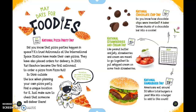National Chocolate Chip Day is May 15th. Do you know how chocolate chips were invented? A baker threw chunks of a chocolate bar into a cookie. National Strawberries and Cream Day is May 21st — like peanut butter and jelly, strawberries and cream are meant to go together, so put whipped cream on some fresh strawberries. And National Hamburger Day is celebrated on May 28th. Americans eat around 50 billion hamburgers a year — bite into a burger to add to this count.